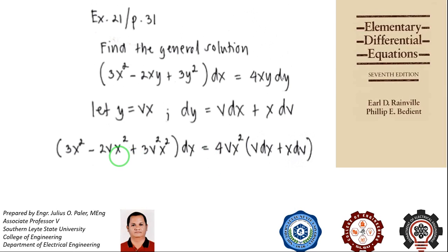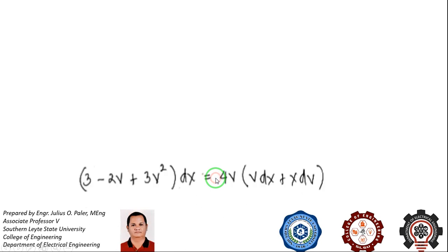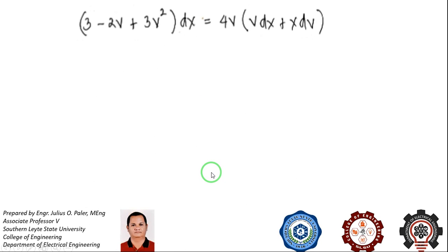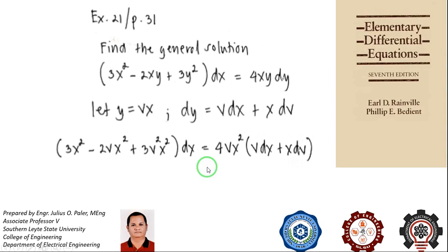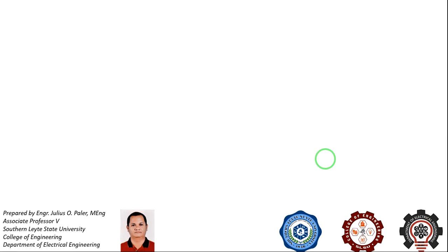As you can see, the x term is common. So you have x squared in all terms. If you divide the entire equation by x squared, then x squared will be eliminated. It will be canceled. So what remains is (3 - 2v + 3v²)dx.